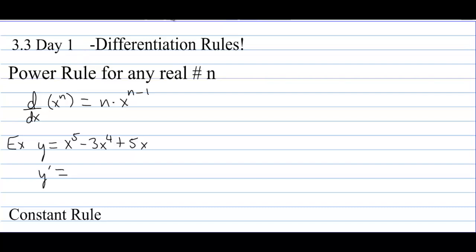This is section 3.3 on differentiation rules. The first rule we have is probably the greatest rule of all time. It's called the power rule. For any real number n, the derivative of x to the n equals: you multiply the front by n, and then you reduce the power by 1.